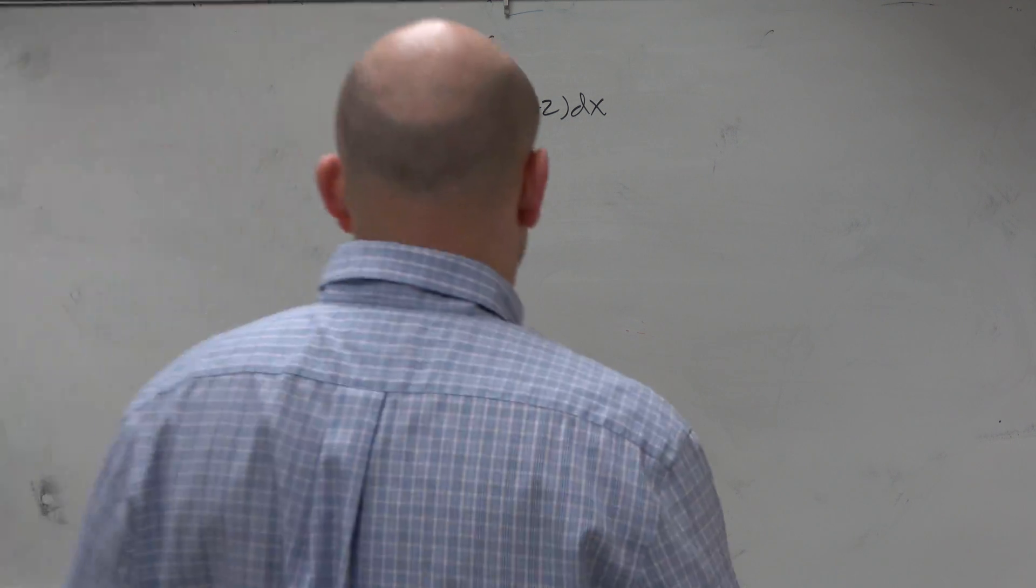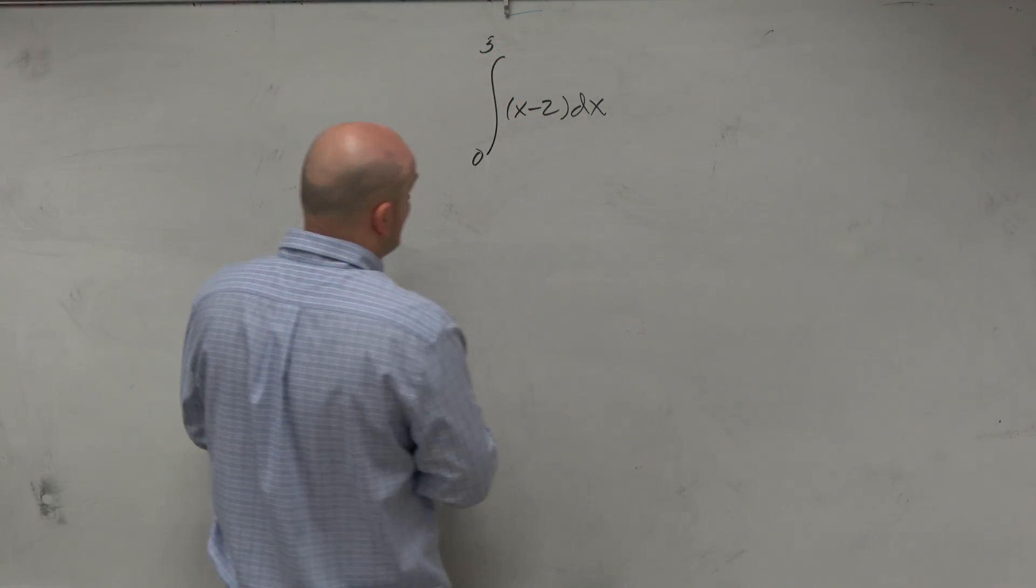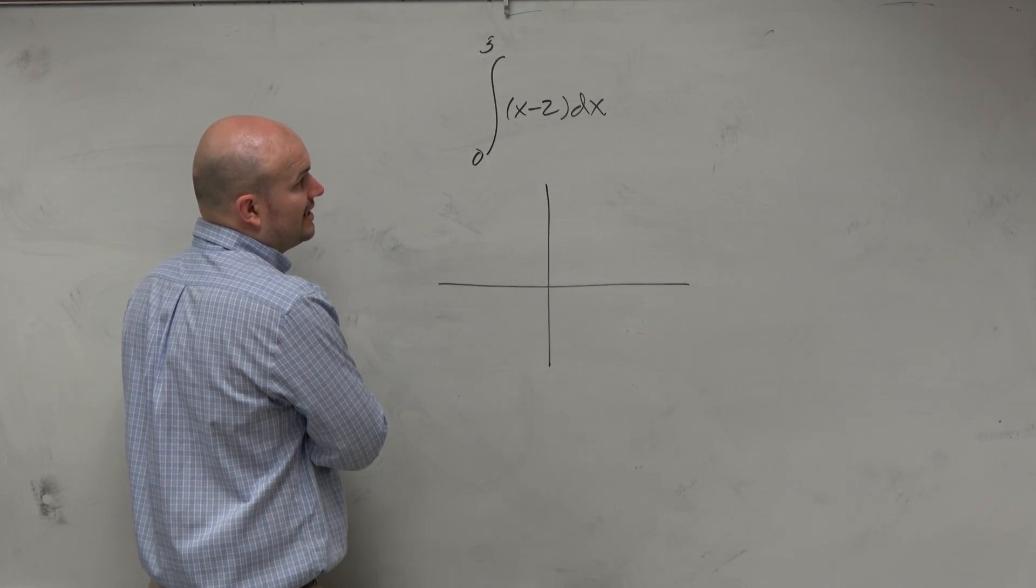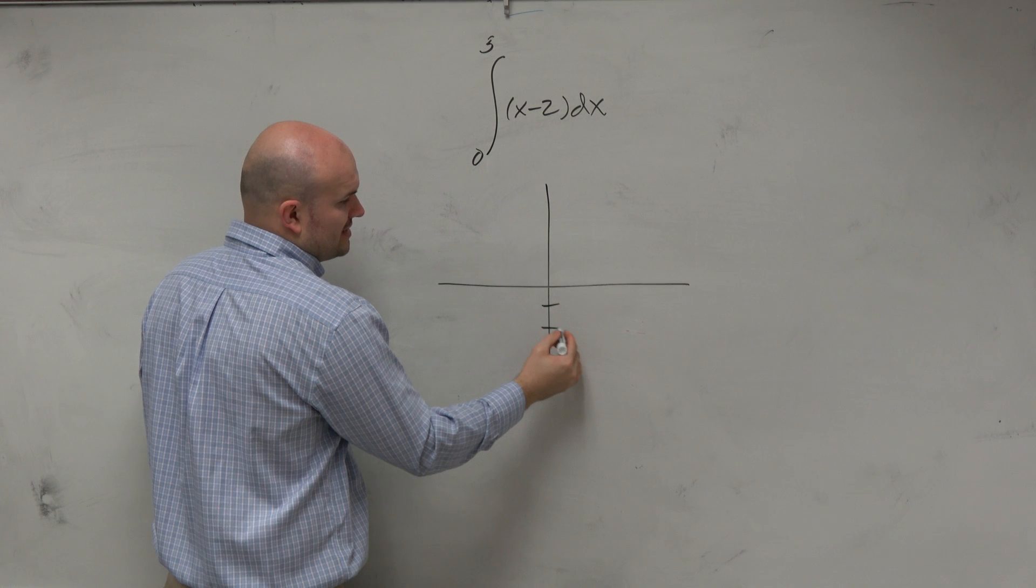All right. So in this one, if we want to evaluate the integral using area, again, we have a line. And we know that this line has a y-intercept at negative 2.